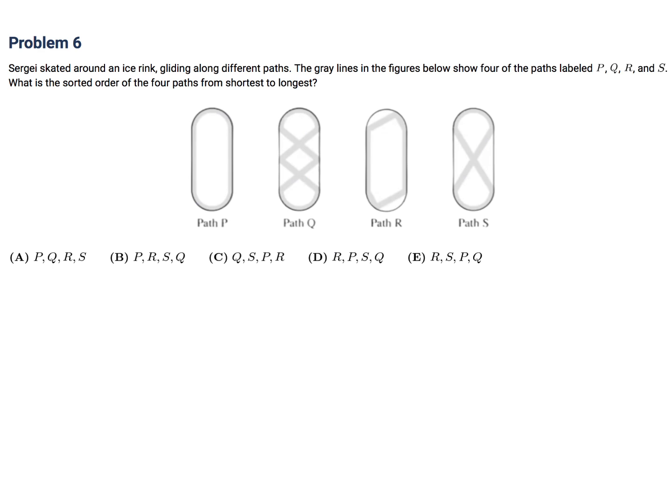Sergei skated around an ice rink, gliding along different paths. The gray lines in the figure show four of the paths, P, Q, R, S. What is the sorted order of the four paths, shortest to longest? Shortest to longest. Okay. Ah, boy. Well, let's see here. The shortest path, I think is, hmm, I'm not actually 100% sure about that right now. But P is, let's compare P to some of these. If I compare P to S,